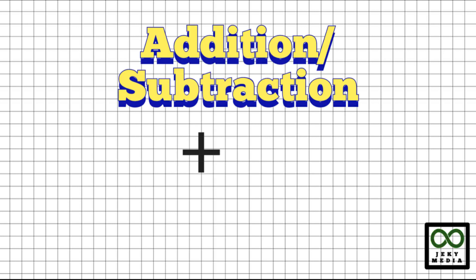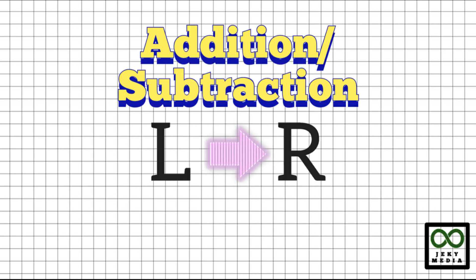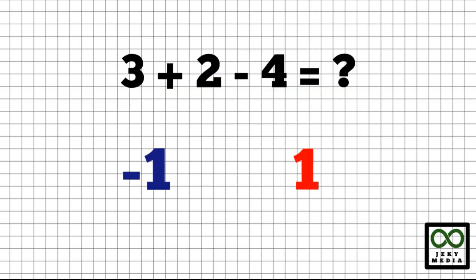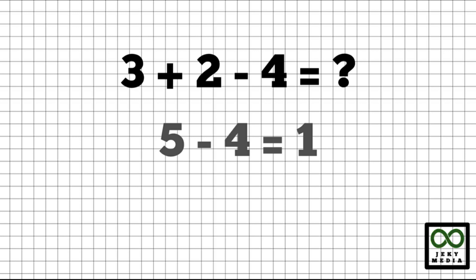Lastly, we have addition and subtraction. Again, the left to right rule is observed. For example, we have 3 plus 2 minus 4. What is your answer: negative 1 or positive 1? Let's start by adding 3 plus 2, which is 5. And 5 minus 4 — the answer is positive 1.